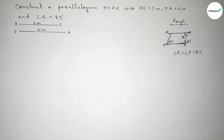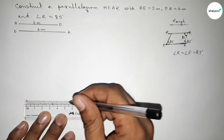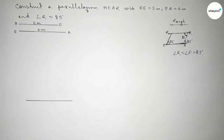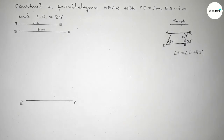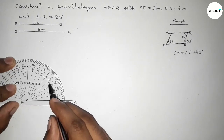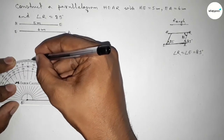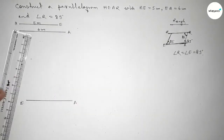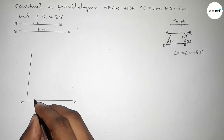So angle E equal to angle R equal to 85 degree. Now first we have to draw the line of 6 centimeter. Taking here point E and here A. Now we have to draw an 85 degree angle on the point E by using a protractor. Counting the angle — this is 85 degree angle. Now joining this line to get here an 85 degree angle.